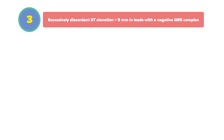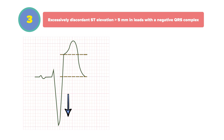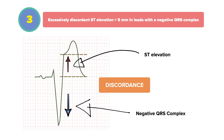The final criteria is the presence of excessively discordant ST elevations greater than five millimeters in leads with a negative QRS complex. In this case, the QRS complex and ST segment are going in opposite directions — this is called discordance. Remember, in the setting of a left bundle branch block this is normal. However, if the discordance is greater than five millimeters, you would consider this to be too much and therefore suggestive of ischemia. So when you see excessive discordance, you assign a score of two.